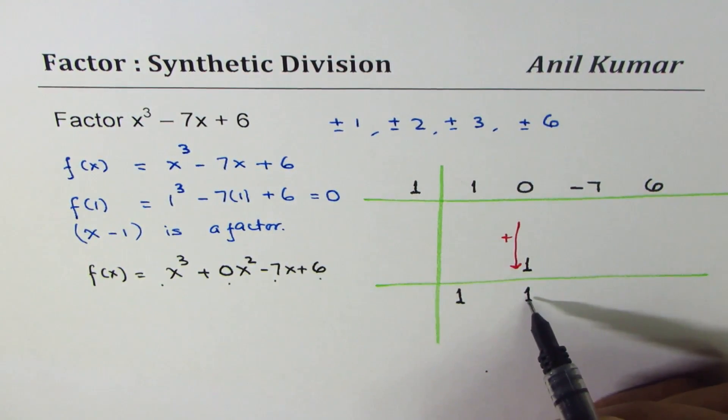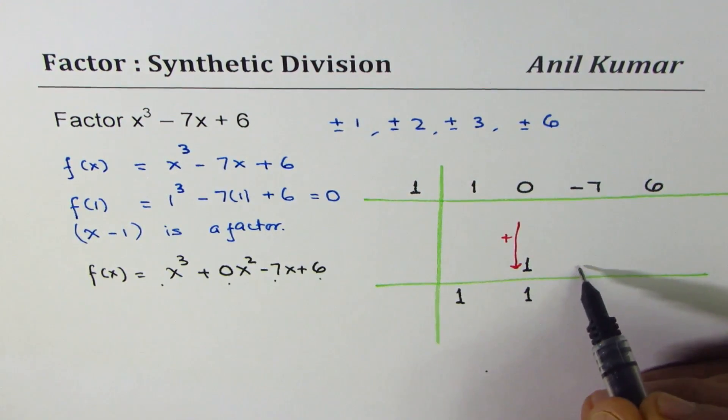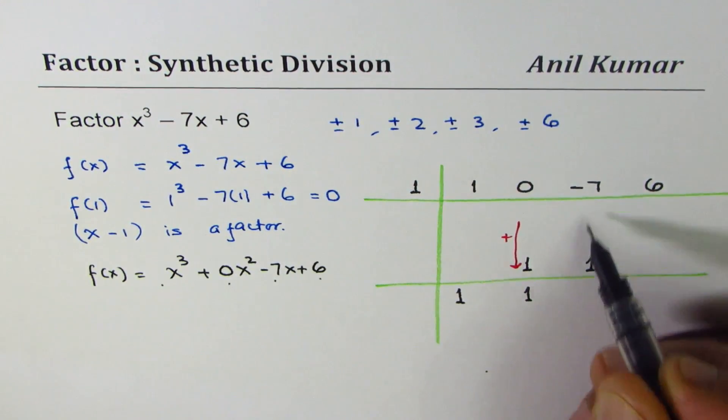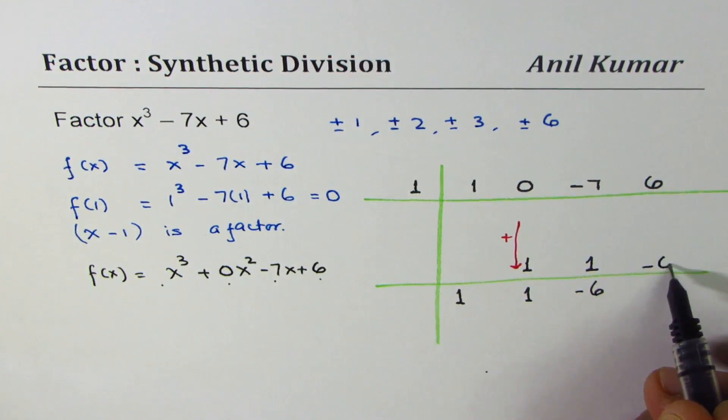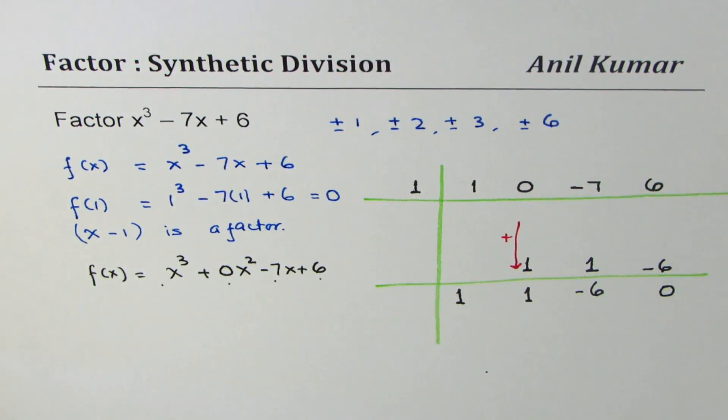We'll again multiply 1 by 1. Place it here, which is 1. Add, we get -6. And when we multiply 1 by -6, we get -6. And when we add, we get 0. And this is the remainder for us.